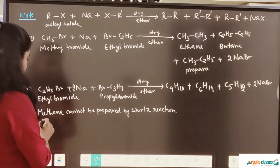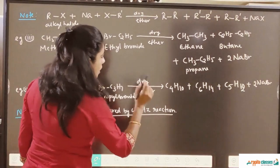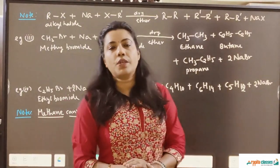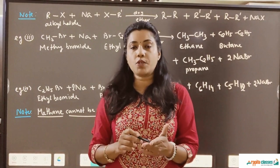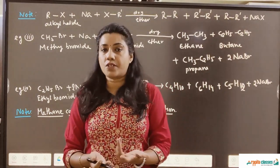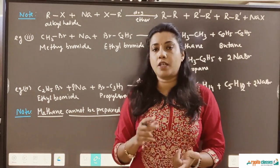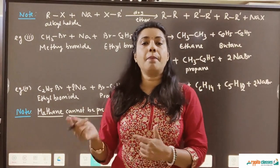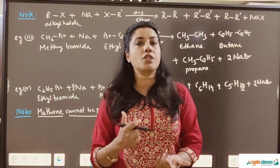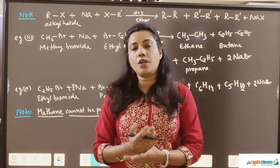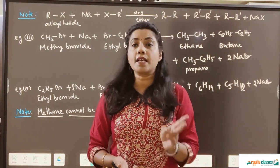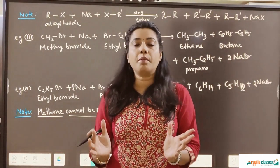So this is not a very suitable method for the preparation of alkanes. Another important thing: methane cannot be prepared by Wurtz reaction. Today we have completed two reactions — the first is dehydrohalogenation, which happens in presence of alcoholic KOH, and the second is reactions with metals, covering magnesium forming Grignard reagent and sodium giving Wurtz coupling reaction. In the next lecture, we are going to cover the mechanism of reactions, studying two very important mechanisms — SN1 and SN2 — and the differences between them.